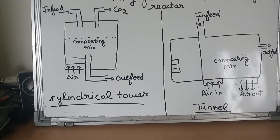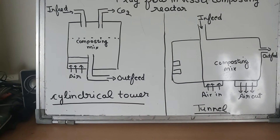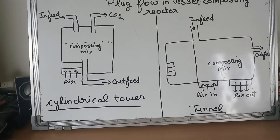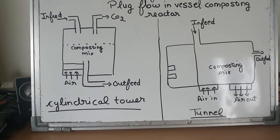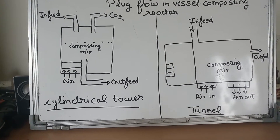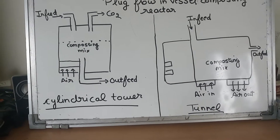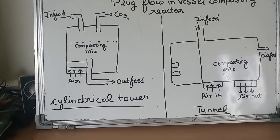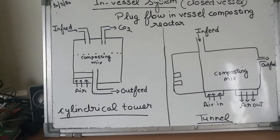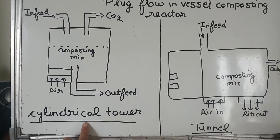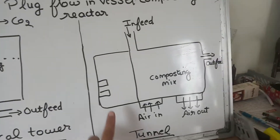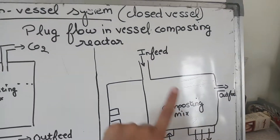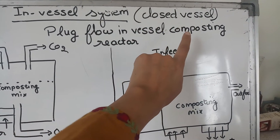The in-vessel system also minimizes the release of offensive odors. It includes higher efficiency of composting with lower labor cost and a smaller area required for the plant. There are two subtypes: the cylindrical tower and the tunnel — both are plug flow in-vessel composting systems.